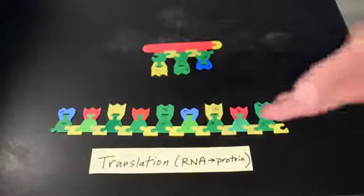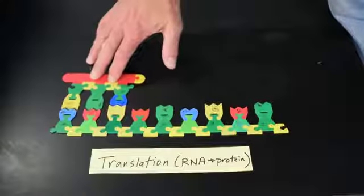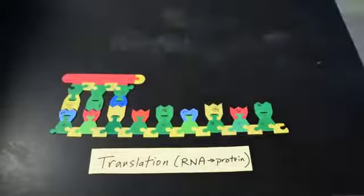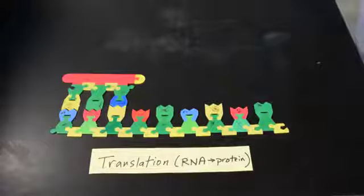So imagining the ribosome is here, the first tRNA will come in. The tRNA that comes in is the one that has its anticodon complementary to the codon. But remember the ribosome has room for two at a time, so in comes the second one.